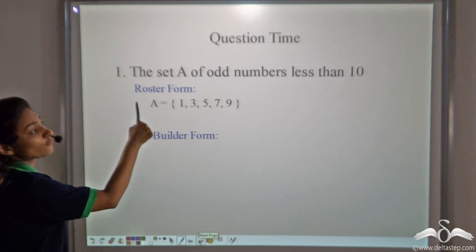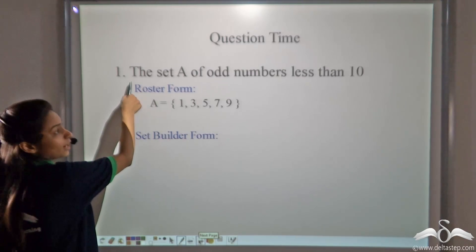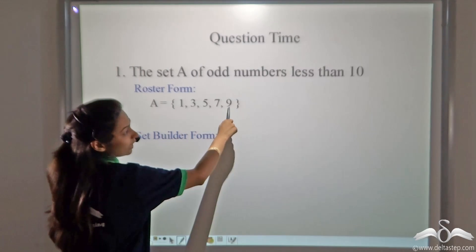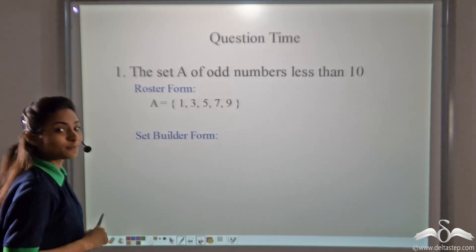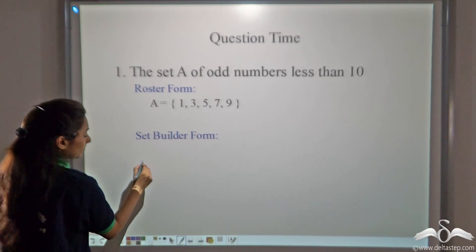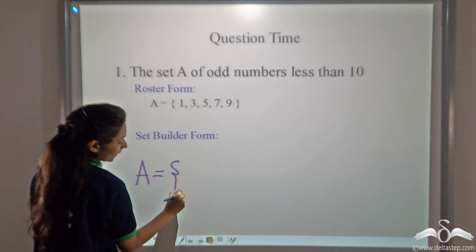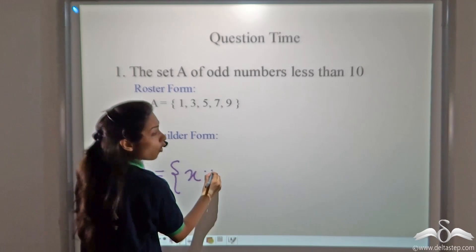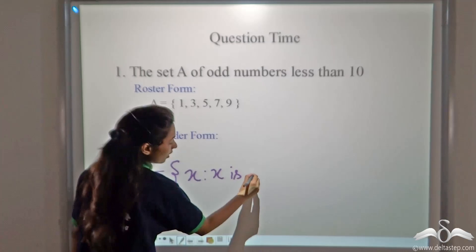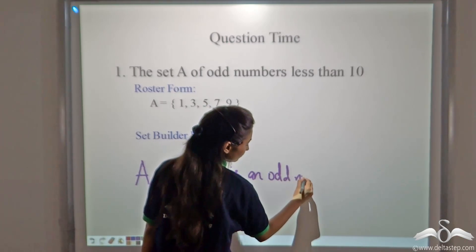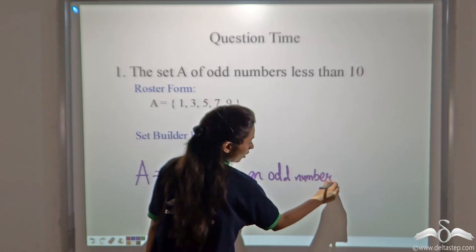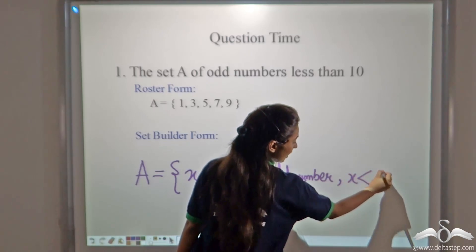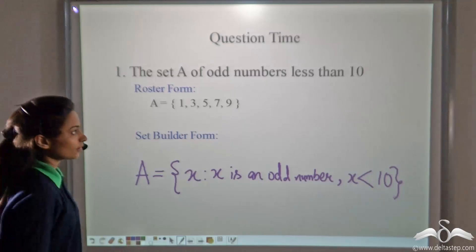Answer this yourself. The set A of odd numbers less than 10. We have described the set for you here. The roster form is A which is 1, 3, 5, 7 and 9. It is 9 because it is less than 10. How will you write it in set builder form? Try writing. So A is equal to — use the variable x such that — what property does x have? It is an odd number. So x is an odd number. We have another property as well: it is less than 10. So give a comma and write x is less than 10. So this is our answer.